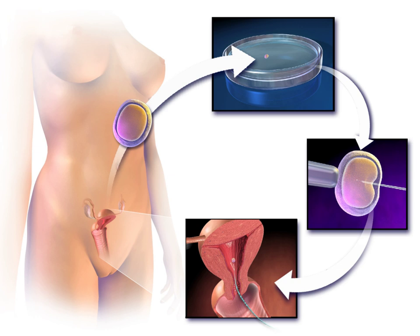Egg donors are resources for women with no eggs due to surgery, chemotherapy, or genetic causes, or with poor egg quality, previously unsuccessful IVF cycles, or advanced maternal age. In the egg donor process, eggs are retrieved from a donor's ovaries, fertilized in the laboratory with sperm from the recipient's partner, and the resulting healthy embryos are returned to the recipient's uterus. Sperm donation may provide the source for the sperm used in IVF procedures where the male partner produces no sperm or has an inheritable disease, or where the woman being treated has no male partner.